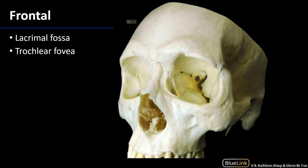Now let's look at the frontal bone. Recall it is the front of the neurocranium, and there are two features we'd really like you to understand. The first is the lacrimal fossa — the osseous feature that denotes where the lacrimal gland lives. The lacrimal gland is a lateral feature in the superior orbit, and this indentation on the frontal bone is the lacrimal fossa. We also have a trochlear fovea.